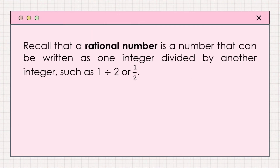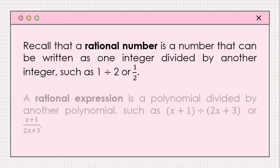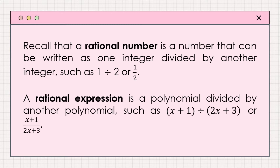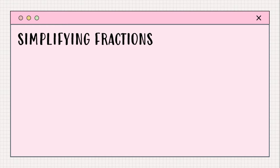Recall that a rational number is a number that can be written as one integer divided by another integer, such as 1 divided by 2, or one-half. This idea can be extended to algebraic expressions. A rational expression is a polynomial divided by another polynomial, such as quantity x plus 1 divided by quantity 2x plus 3. In your previous grade level, you learned the concepts of similar fractions, equivalent fractions, and simplifying fractions.